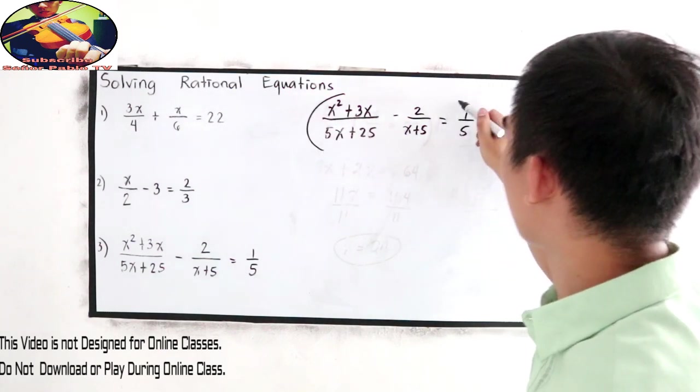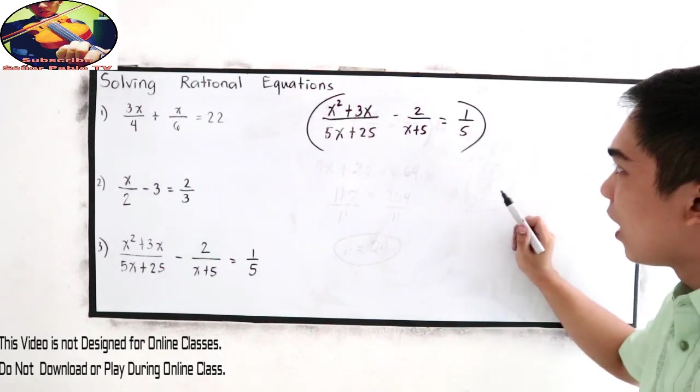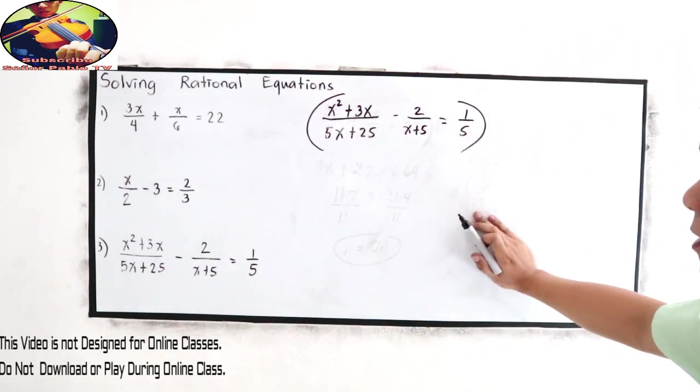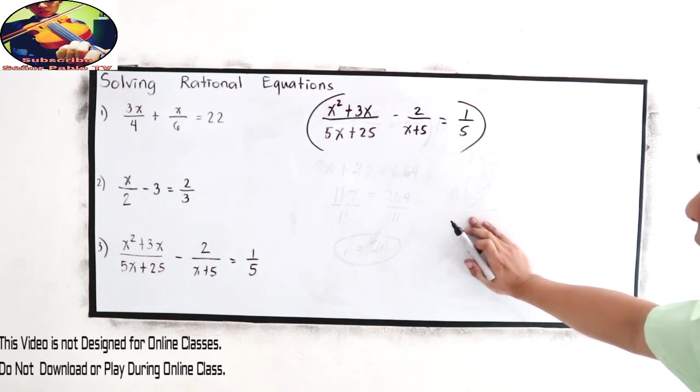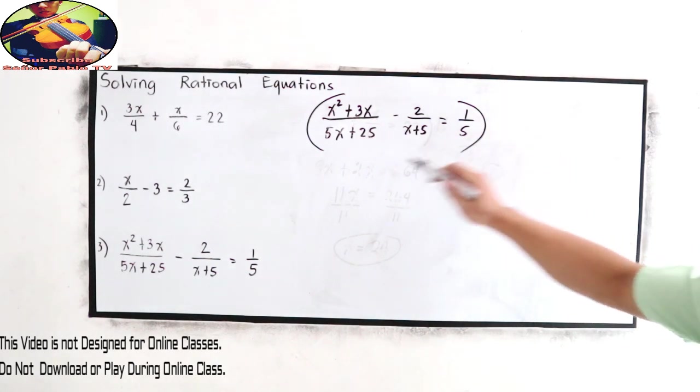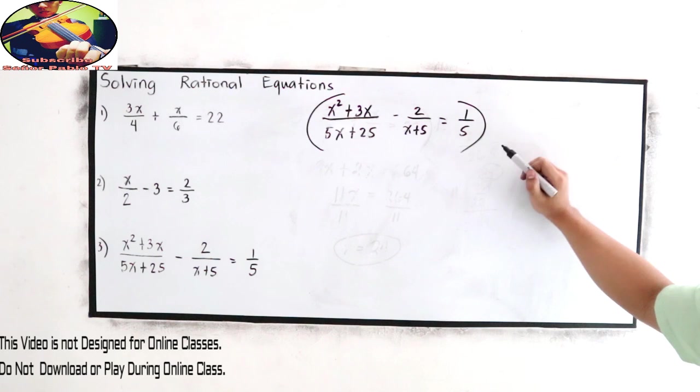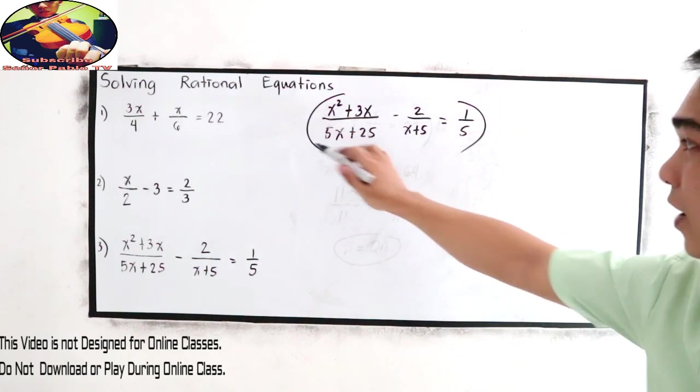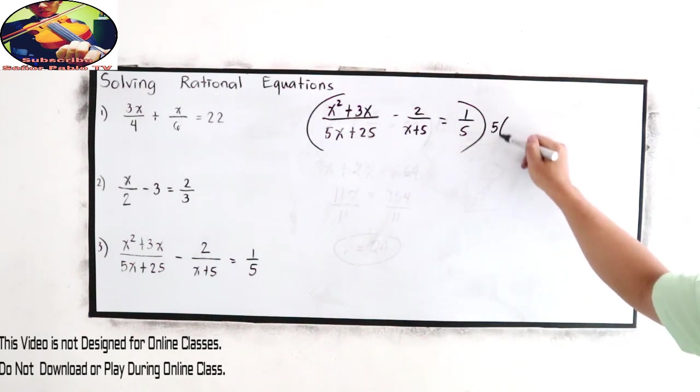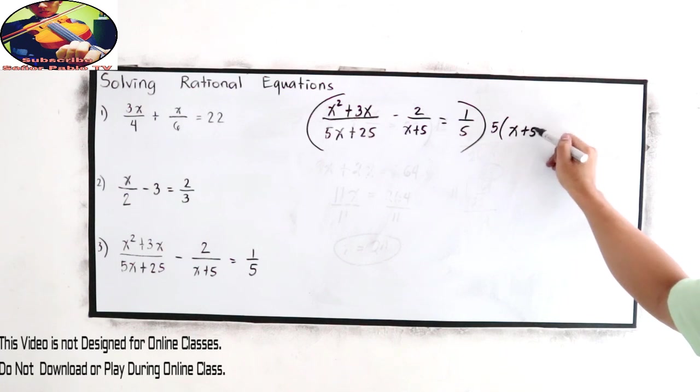It's your choice. So let us find the LCD, multiply the LCD to our equation. Our LCD is this one, 5x plus 25. Let us factor out. That is 5 times x plus 5.